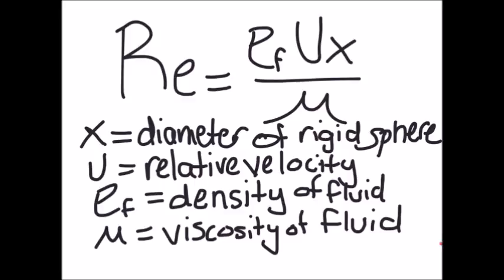In this equation, X is the diameter of a rigid sphere. U is the relative velocity. Rho is the density of the fluid. And mu is the viscosity of the fluid.